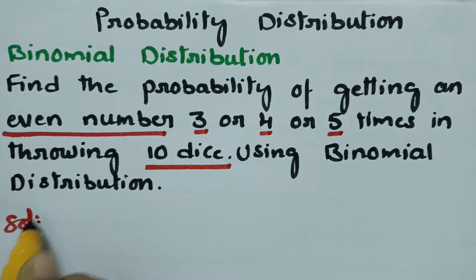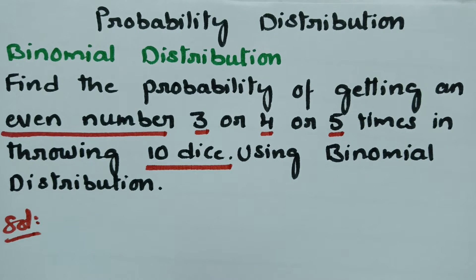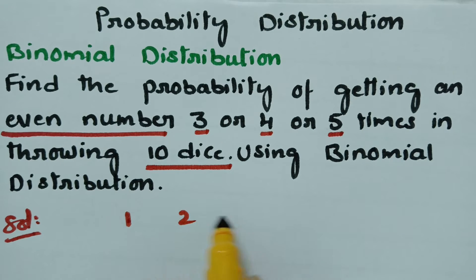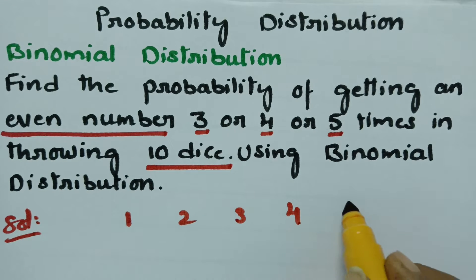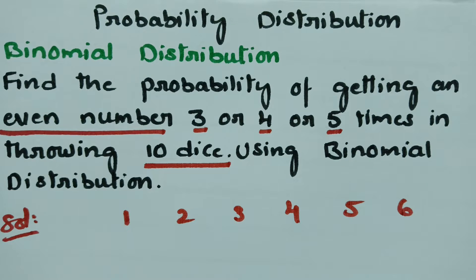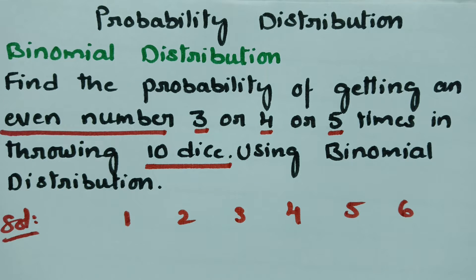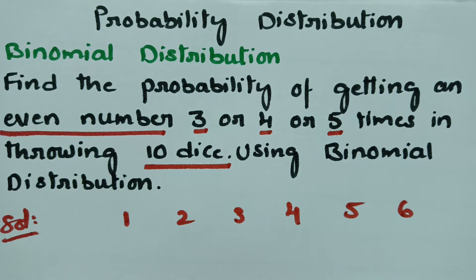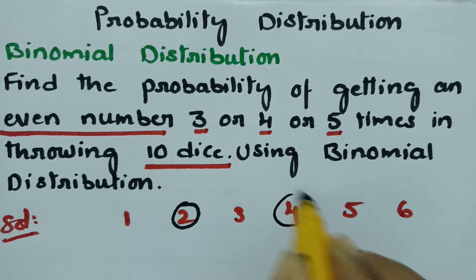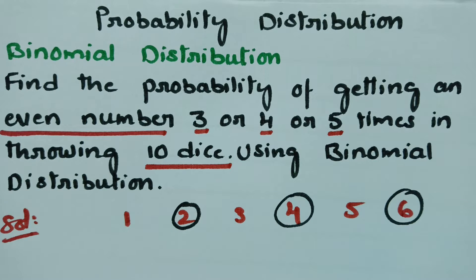On a die there are six numbers: 1, 2, 3, 4, 5, and 6 — so six total. The even numbers on a die are 2, 4, and 6, so the probability of getting an even number when a die is thrown is determined from these.